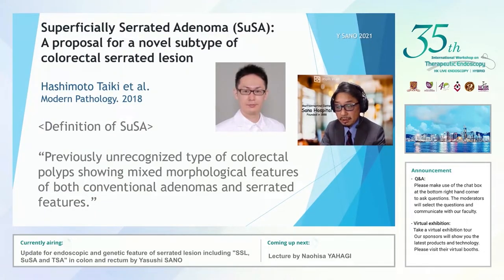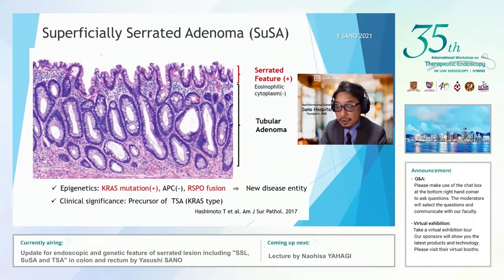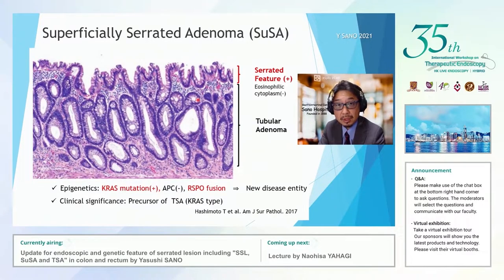Recently, a concept of the superficially serrated adenoma, SUSA, has been reported. The definition of SUSA is a previously unrecognized type of colorectal polyp that has a mixture of both conventional adenoma and serrated morphological features. This is the pathological features of SUSA: it is a region with a serrated feature in the superficial third, and a tubular adenoma in the lower two-thirds. KRAS mutation and RSPO fusion are involved in this region, and it is considered to be a precursor region of the traditional serrated adenoma.